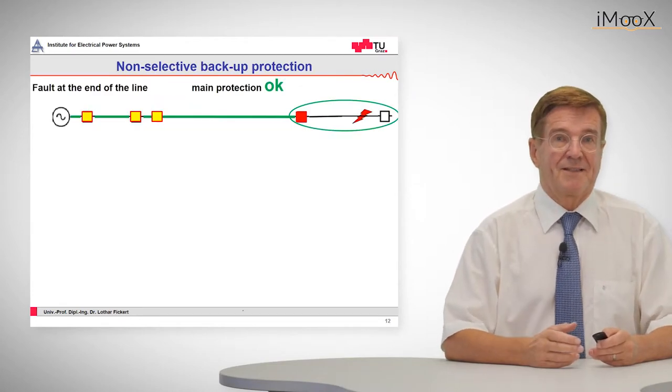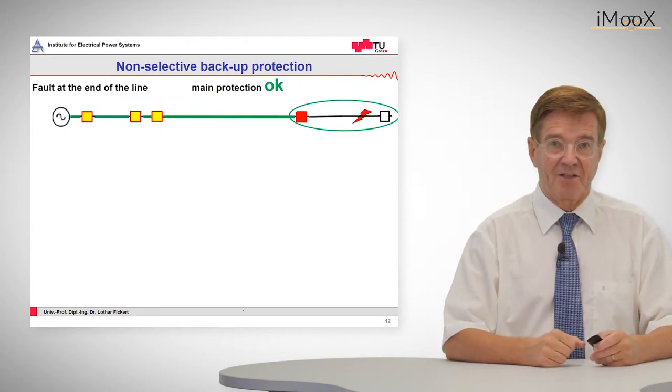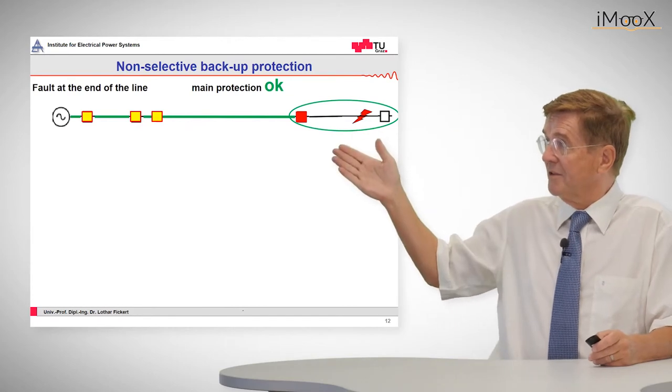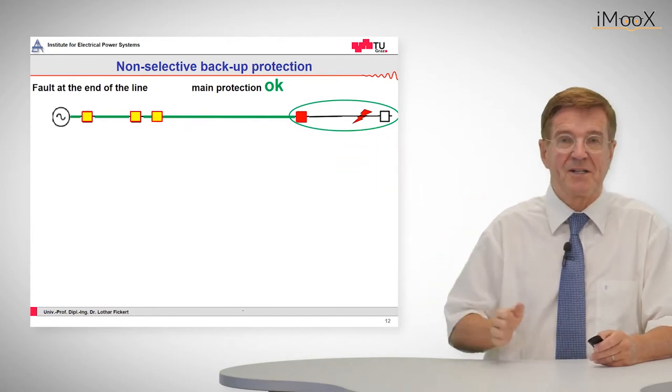Let's compare this. This is a trip that has worked out properly. So we have a fault at the end of the line, the next relay picks up and trips out. That's okay.